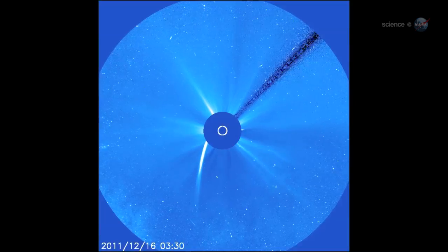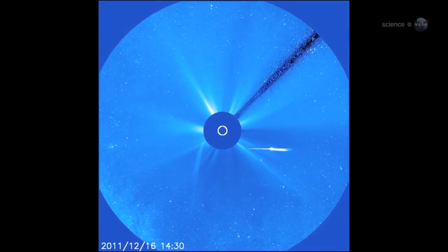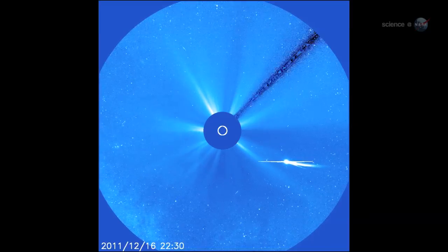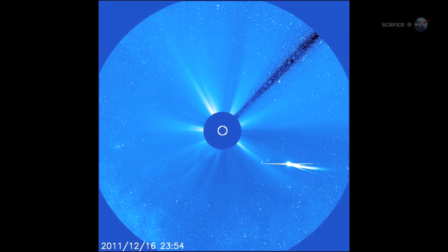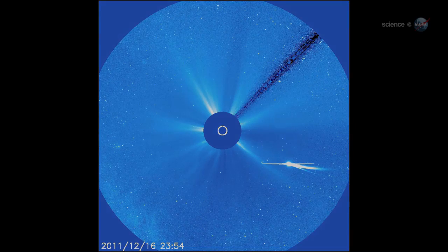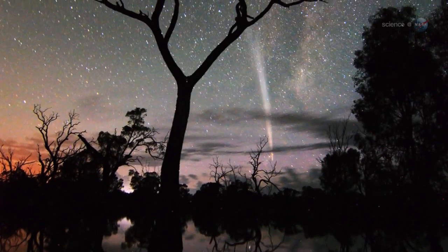What caused Lovejoy to lose its tail inside the Sun's atmosphere, and then regain it later? This is one of the biggest mysteries to me, says Battams. And then there is the ultimate existential puzzle. How did Comet Lovejoy survive at all?